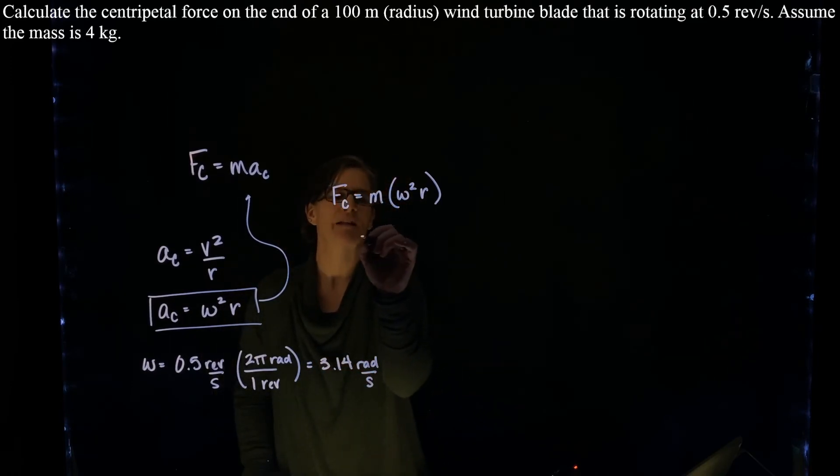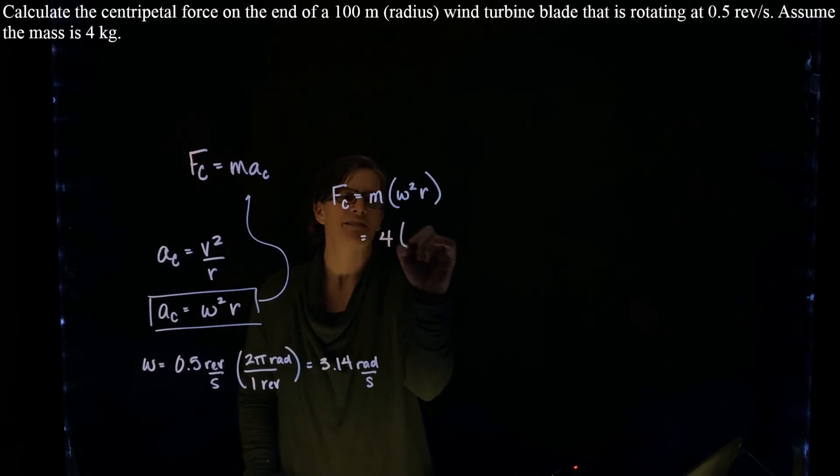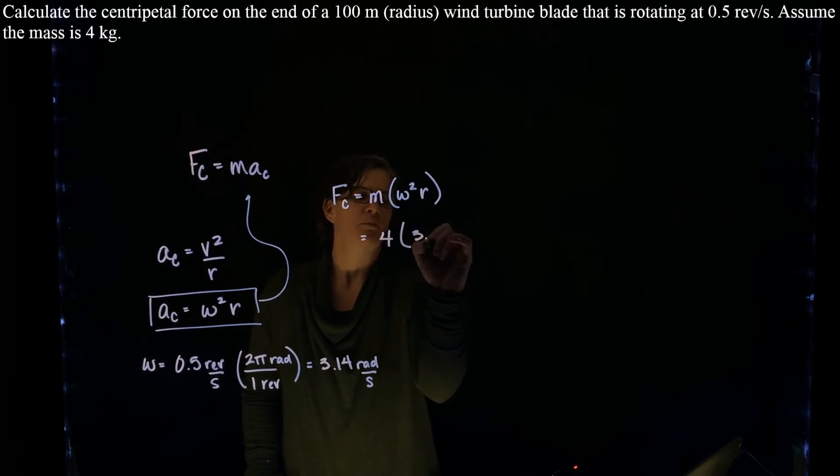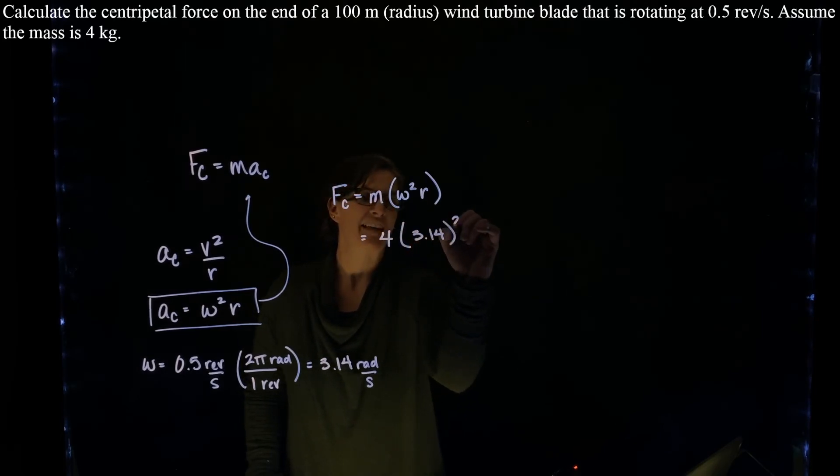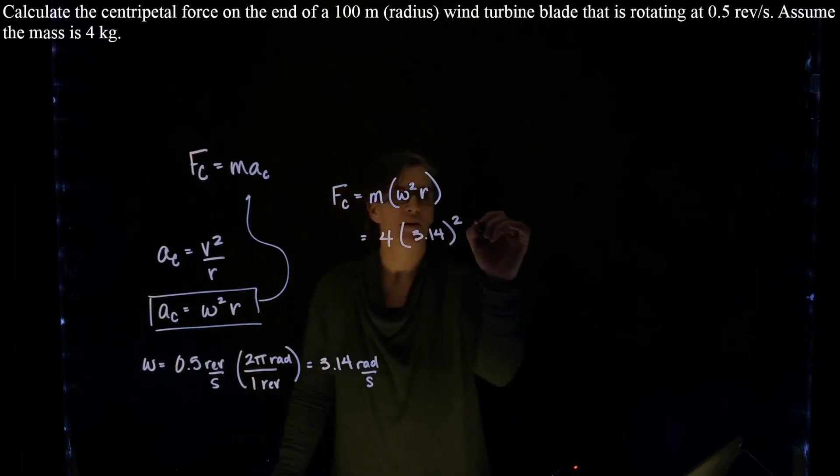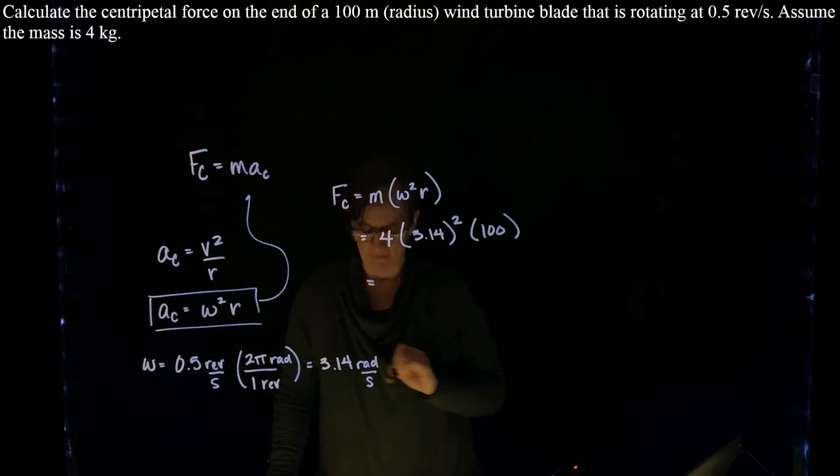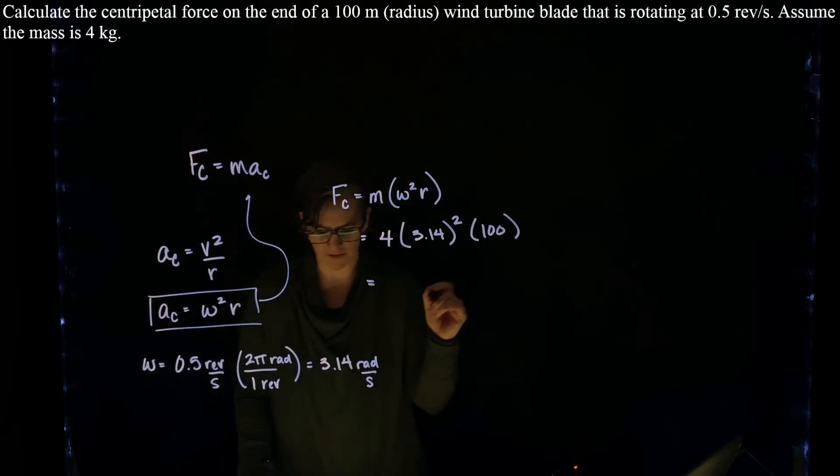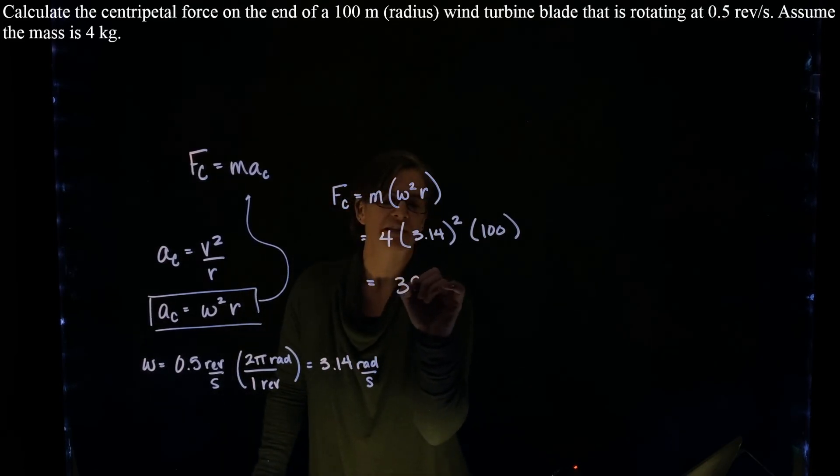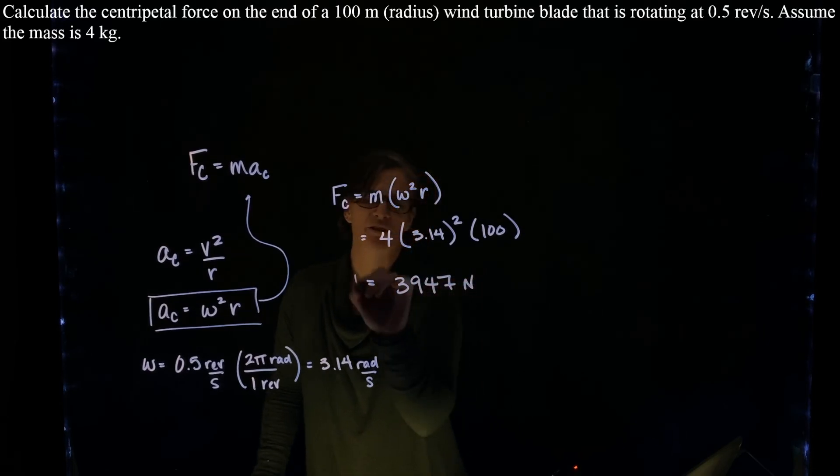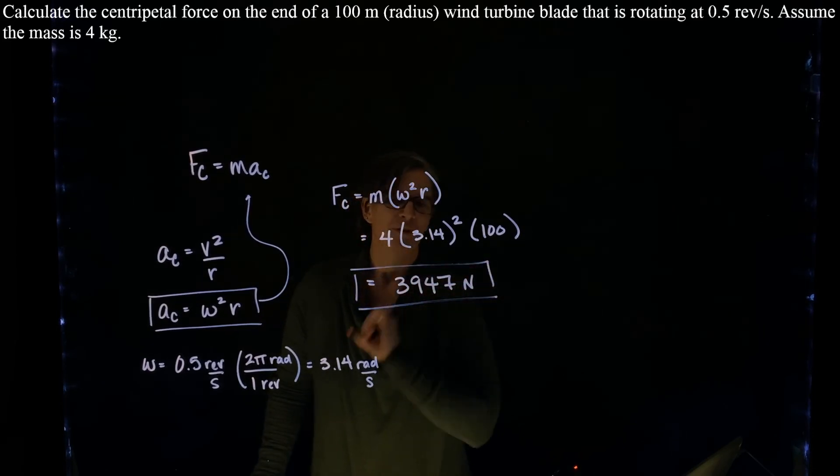All right, now I can use that in my relationship. We have a mass of 4, we have 3.14, that's the angular speed, we square that, and we have a radius of 100 meters. So our centripetal force is 3,947 newtons. Perfect.